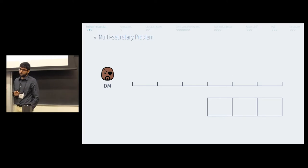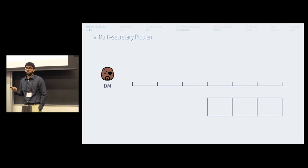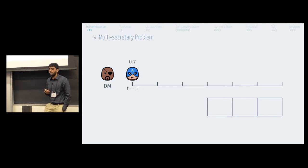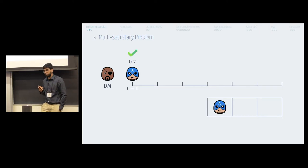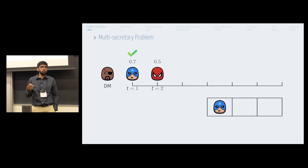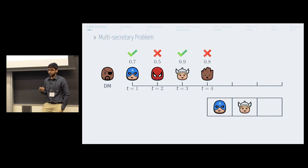To walk you through an example, consider you're going to interview a bunch of seven superheroes, and you want to form a team of three. At time one, you sample Captain America with an ability of 0.7, and you feel that he's good enough and you select him. Then you sample Spider-Man with an ability of 0.5, you feel he's not good enough and you reject him. And the hiring process continues.